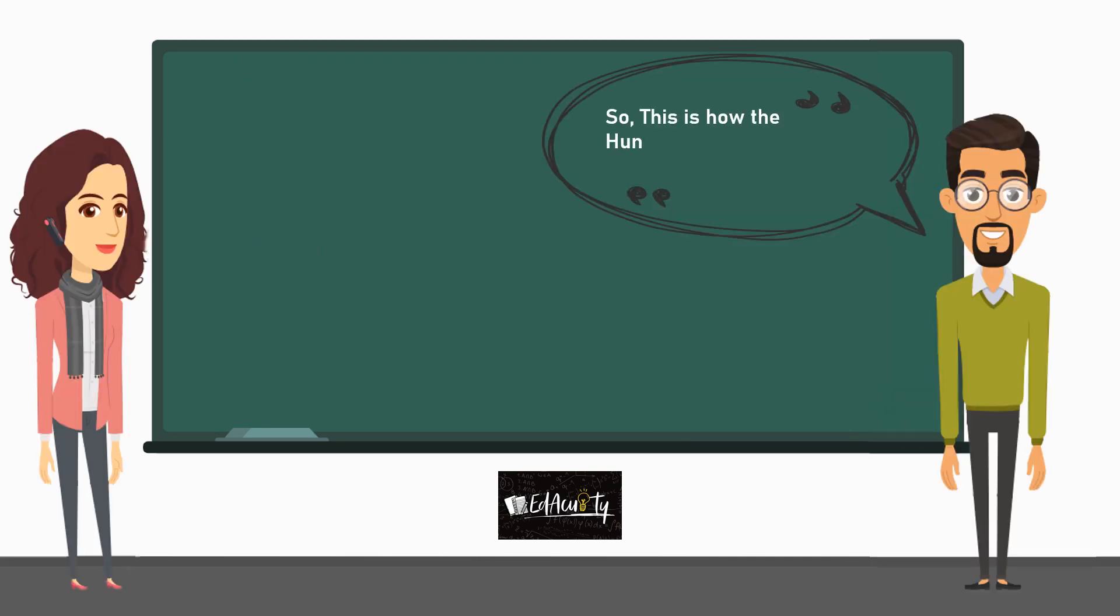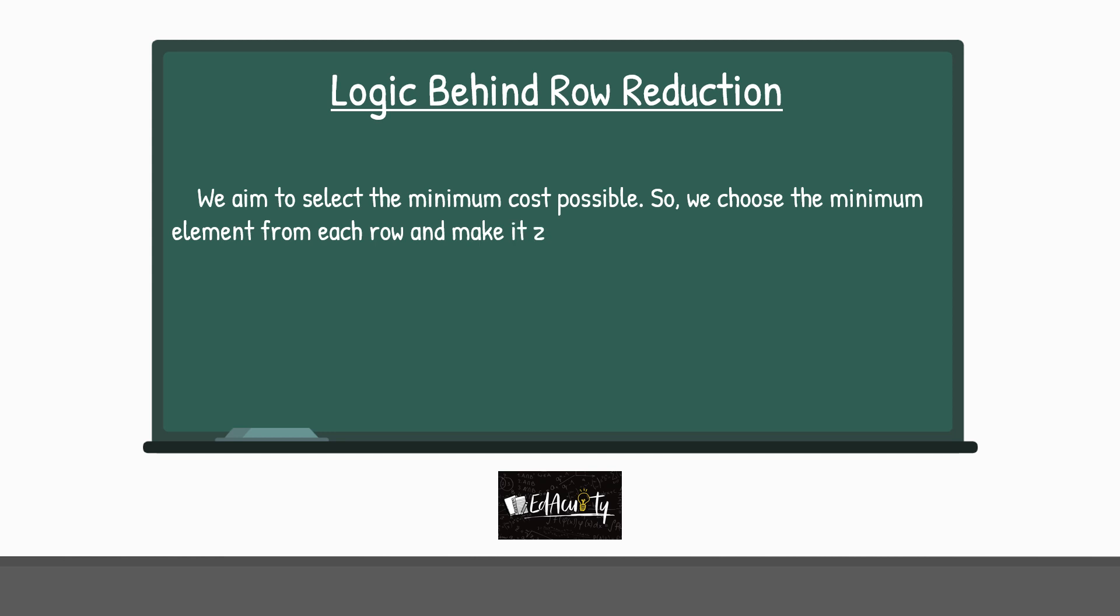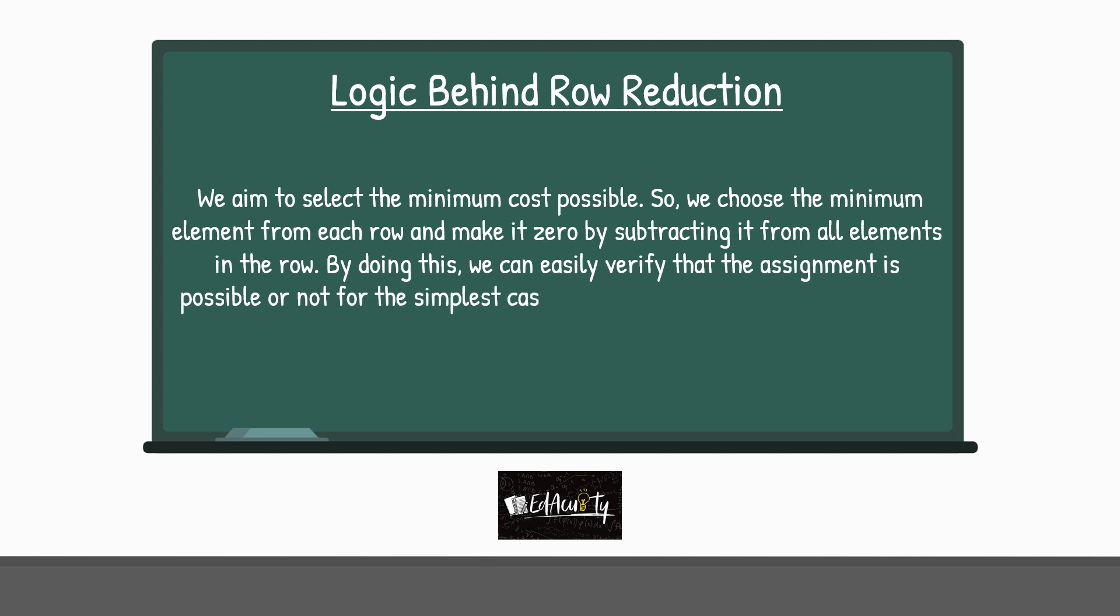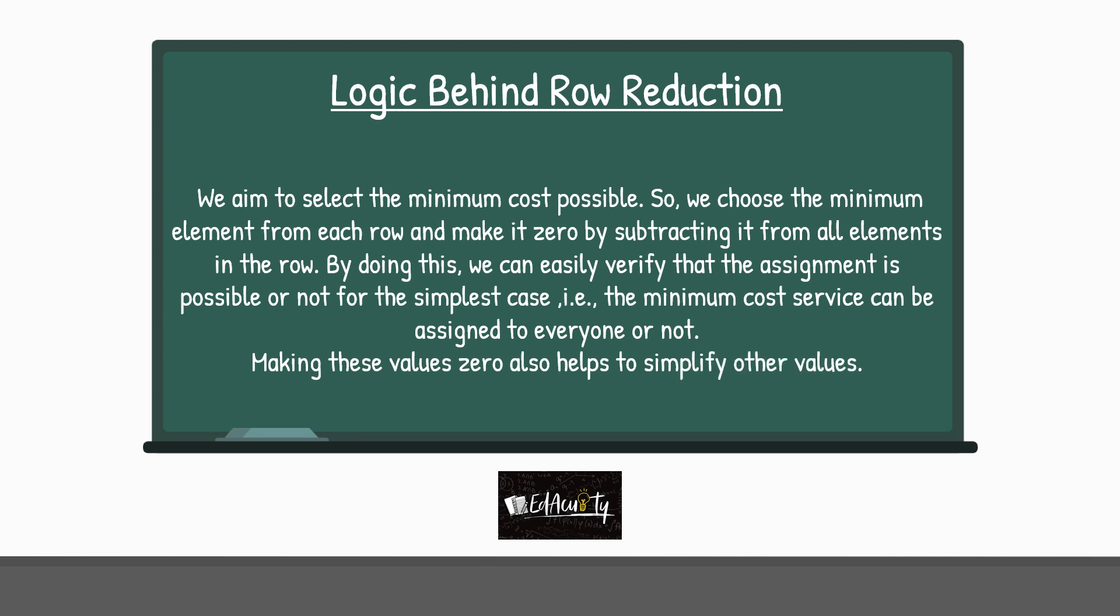So, this is how Hungarian method is used in assignment problems. Yeah, that was quite informative. So, coming back to the question that was asked earlier about row reduction, the reason is that we aim to select the minimum cost possible. So, we choose the minimum element from each row and make it zero by subtracting it from all the other elements in the row. By doing this, we can easily verify that whether the assignment is possible or not. For the simplest case, that is whether the minimum cost service can be assigned to everyone or not. And also, by making all these values zero, it helps us to simplify other values too.